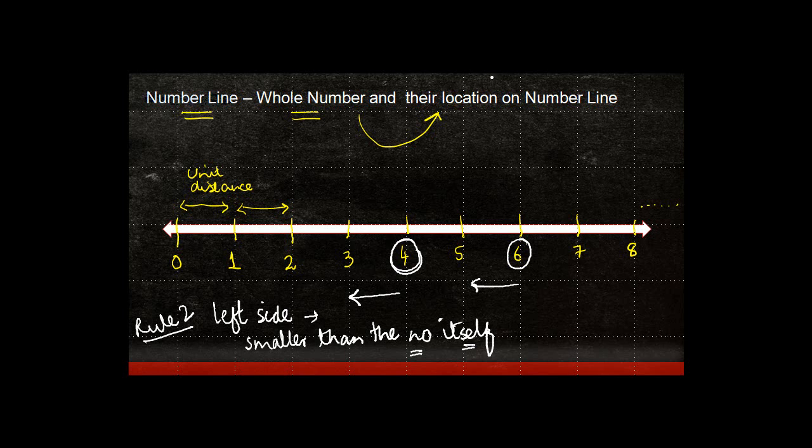So whenever I have to locate a particular whole number on a given number line, if it is higher than a particular number, I will always look at it from the right side. If it is lower than a particular number, I will look at it on the left side.